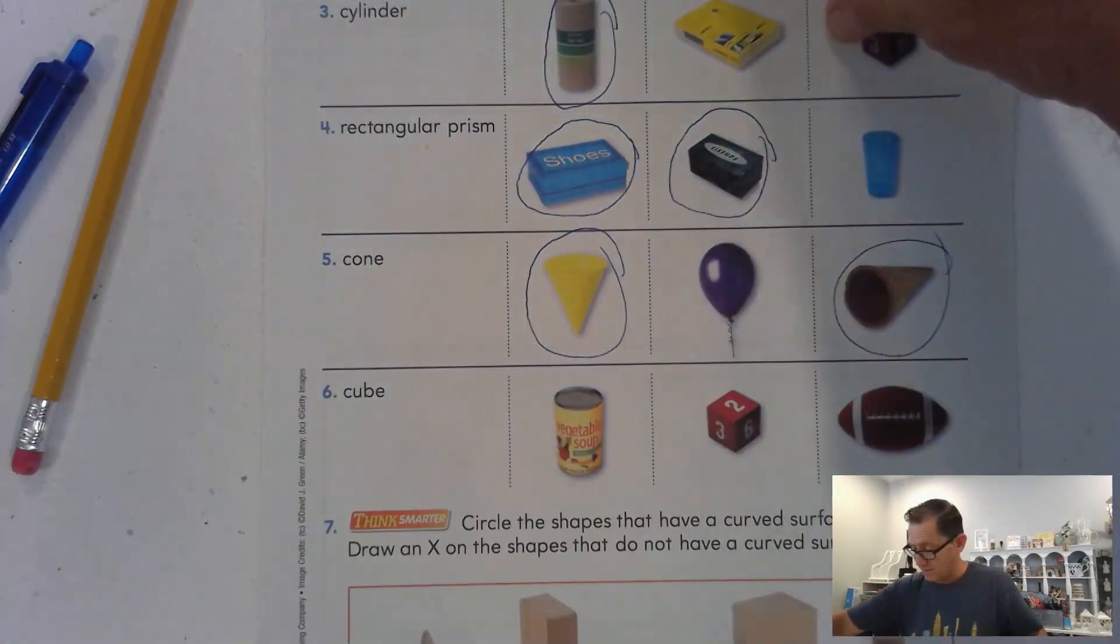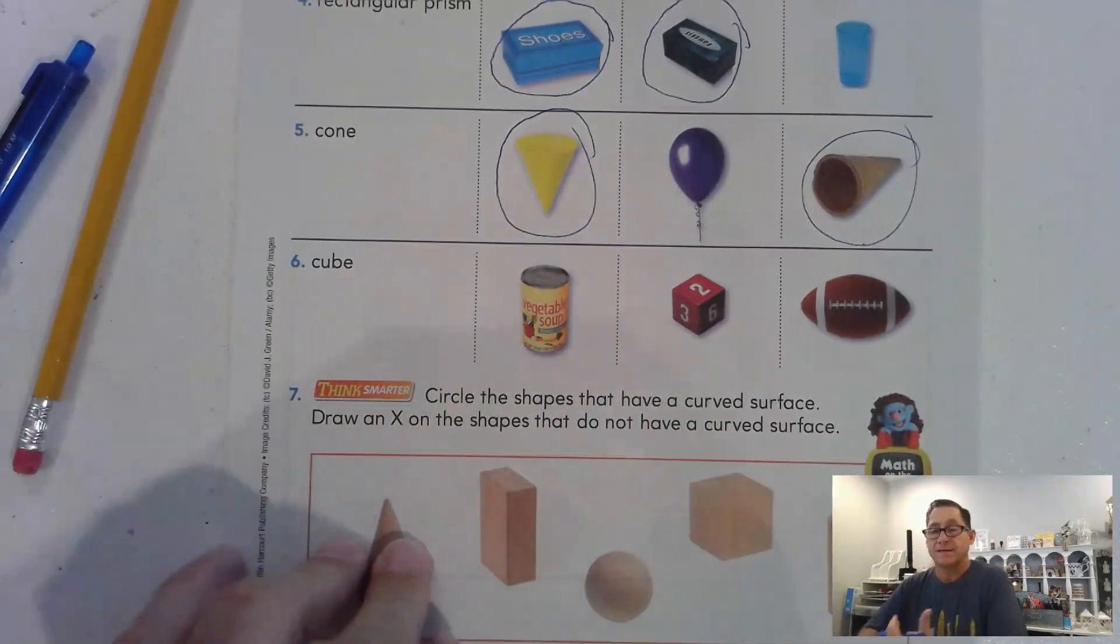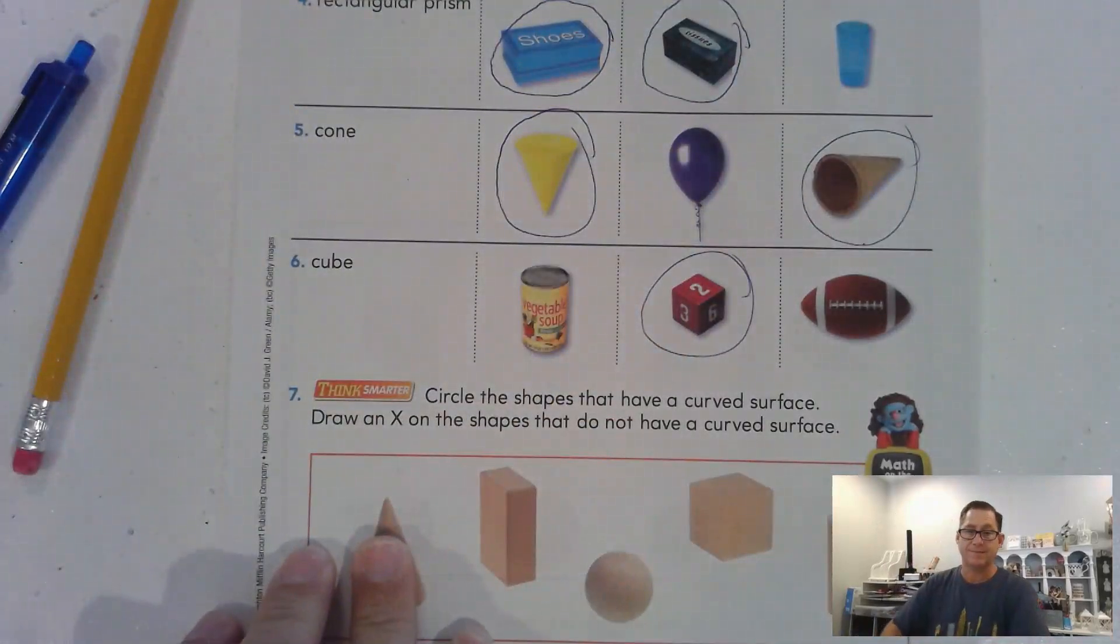And our last one, a cube. Remember, a cube has to have six equal sides. So, that would be the cube.